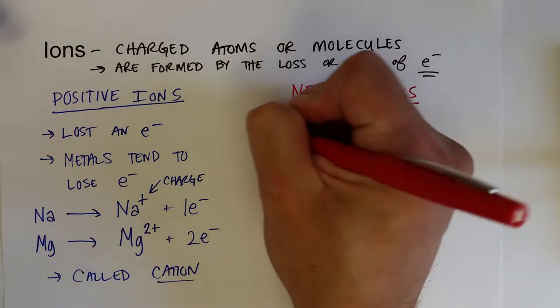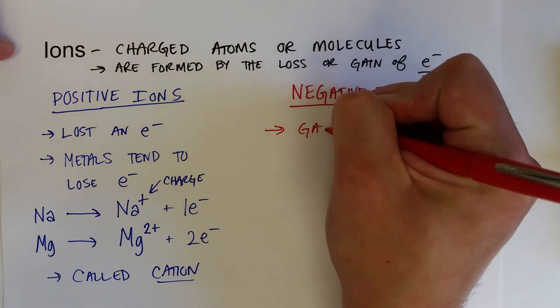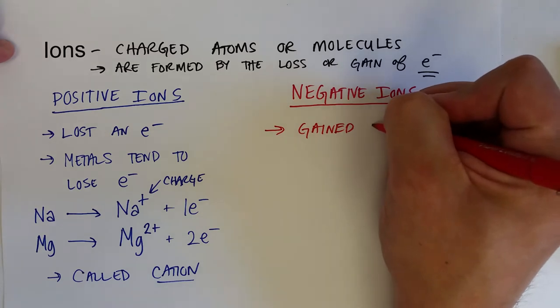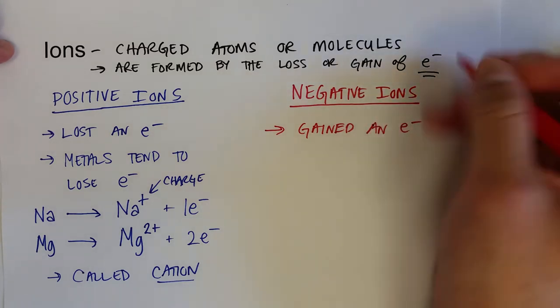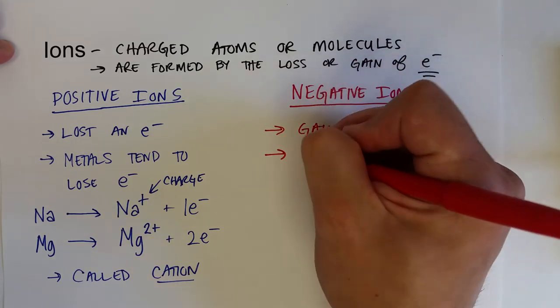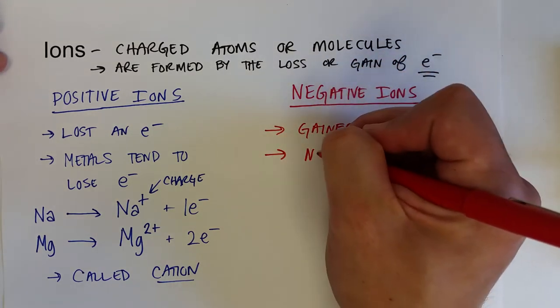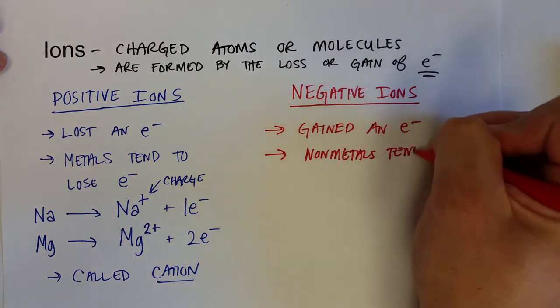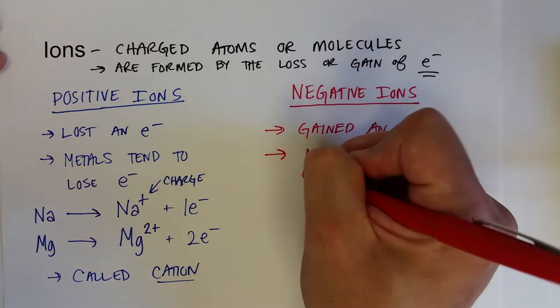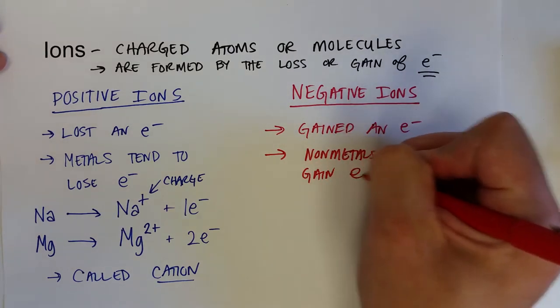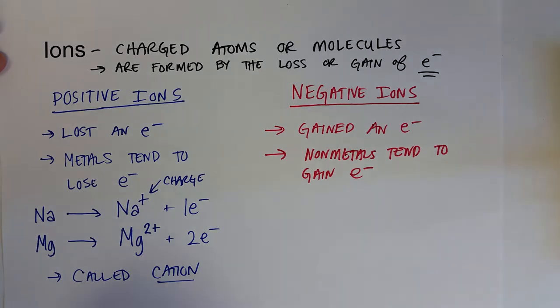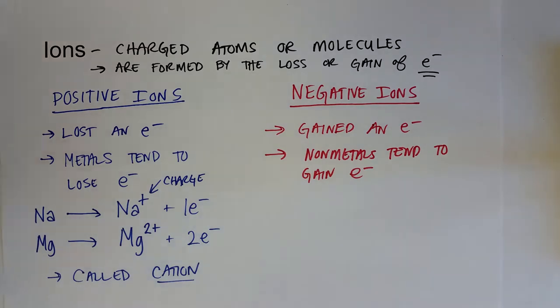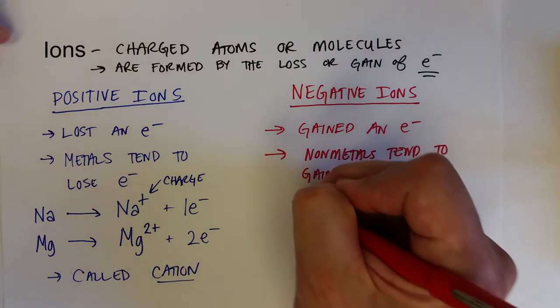Negative ions, on the other hand, are formed by gaining electrons. Gained at least one electron. It turns out that due to electronegativities, that non-metals tend to gain electrons.